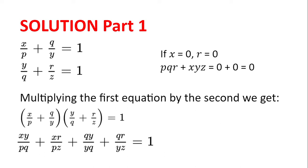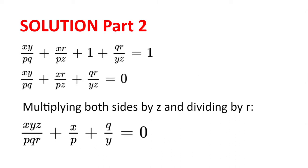Now, we notice that QY divided by YQ is equal to 1. We simplify this to get XY divided by PQ plus XR divided by PZ plus QR divided by YZ is equal to 0.